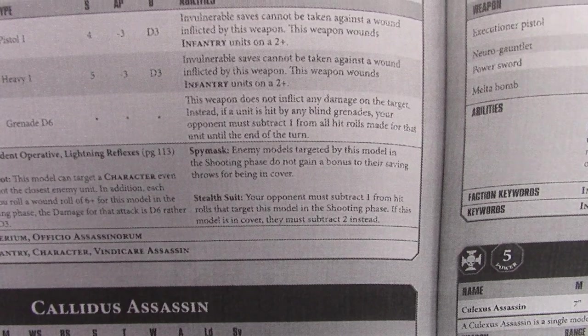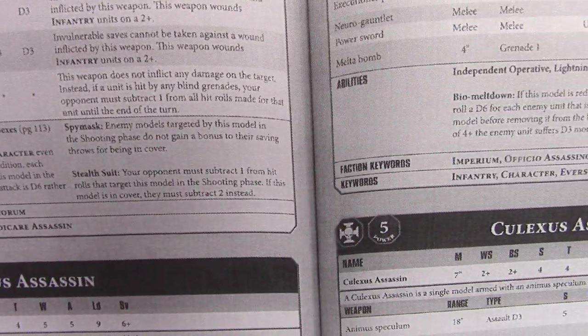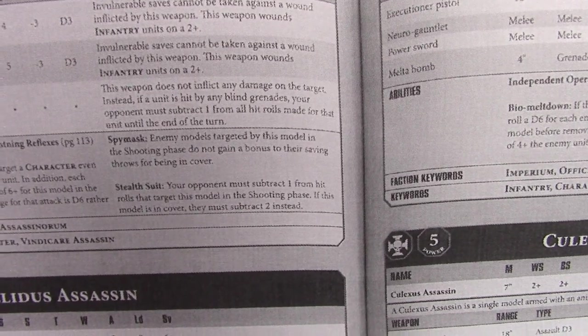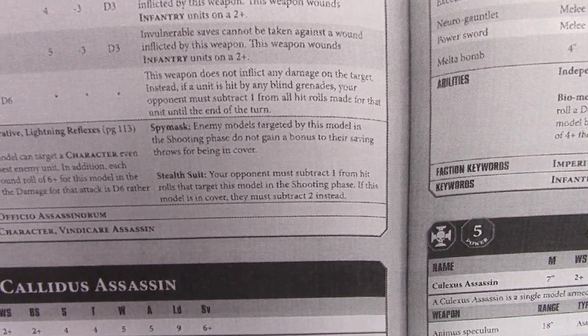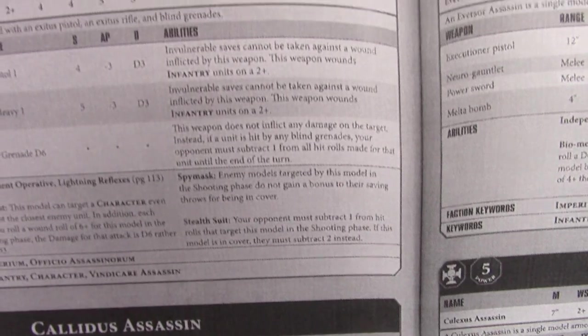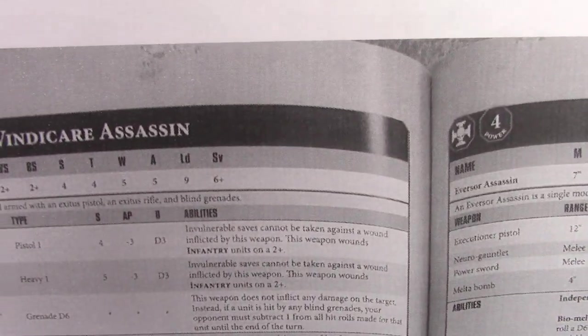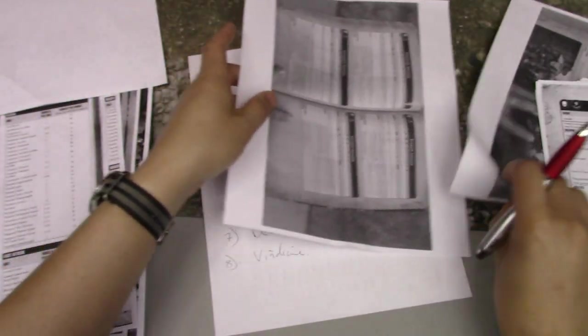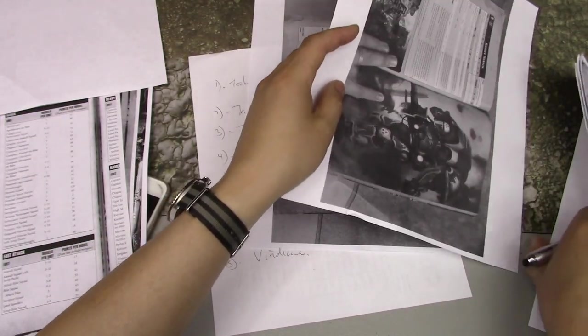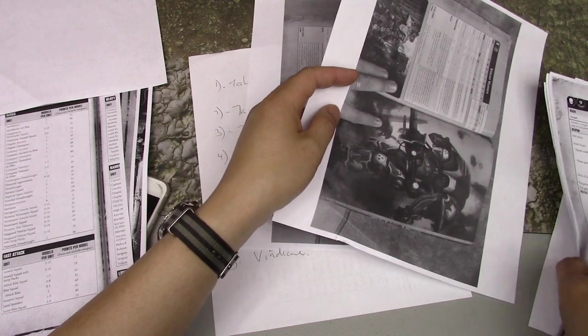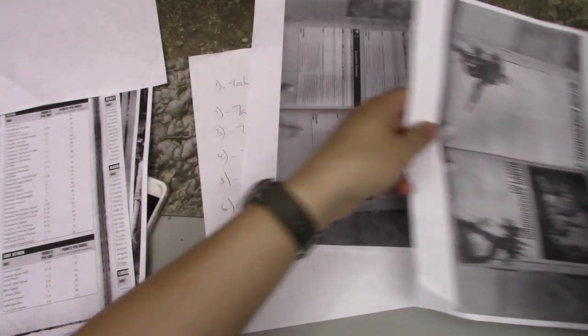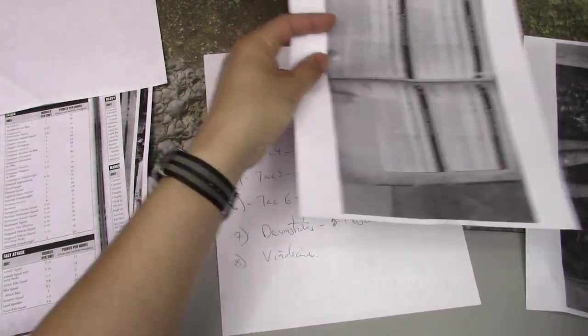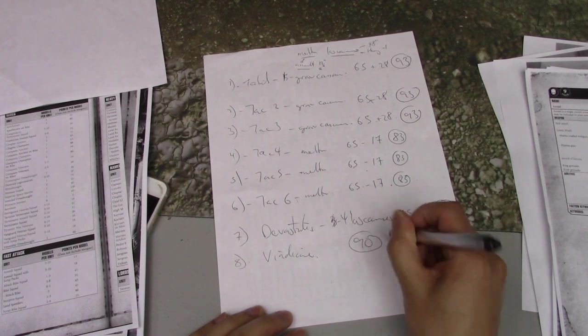So he's designed to kill characters that are also infantry, which is a lot of them. He's a sniper - he can target characters even if it's not the closest. If you roll a six on your wound roll, it does D6 damage instead of D3. Most characters are five or six wounds, so you could totally one shot a character. It ignores cover and gives your opponents minus one to hit this guy, or minus two if he's in cover, which he's almost certainly going to be standing on top of a tall building.